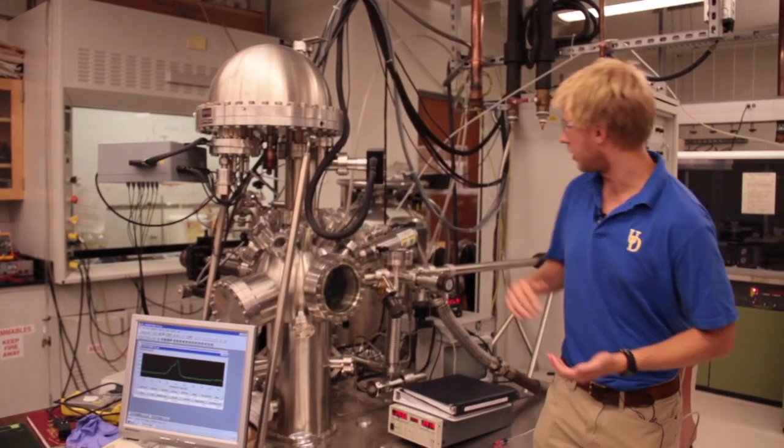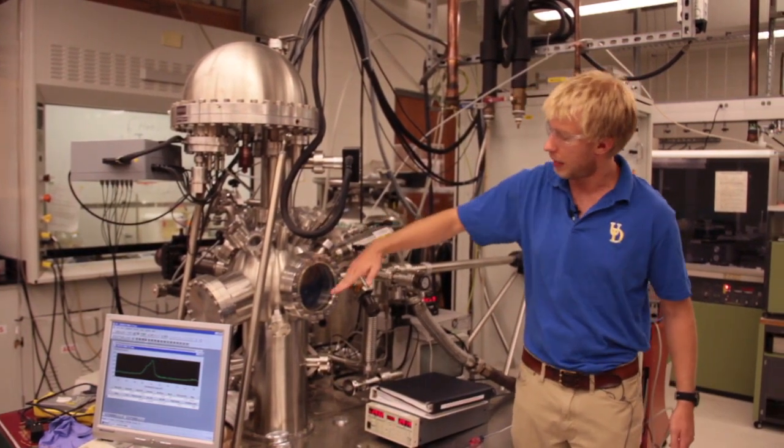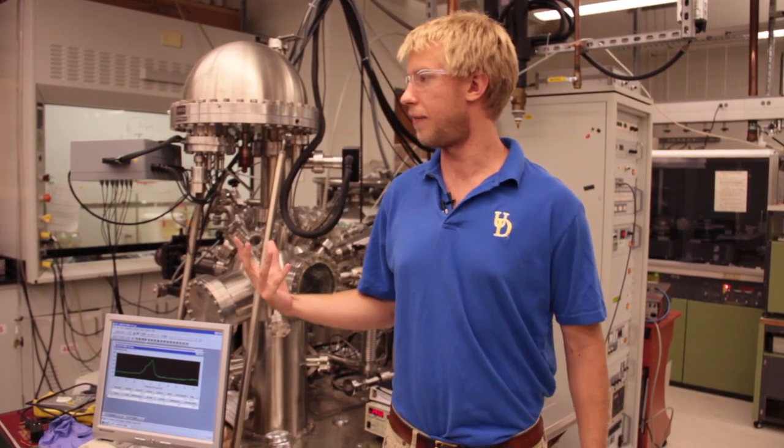We probe this matter by shooting these X-rays out of this tube at whatever our sample is. The X-rays come out at a certain known energy and they knock off electrons.